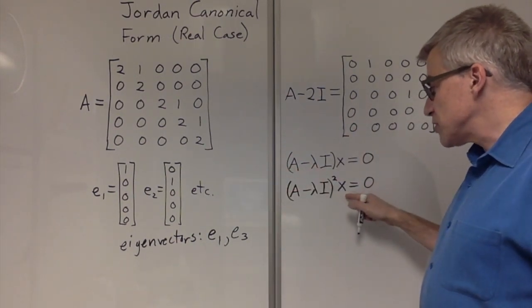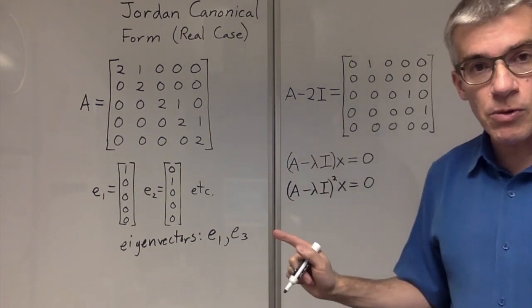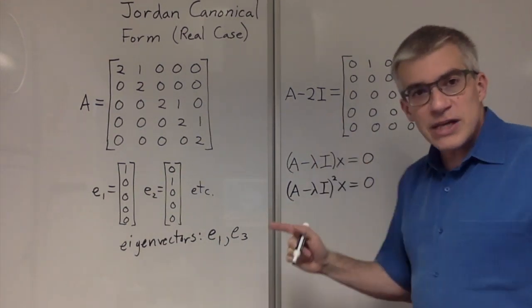it will produce a vector that, if you then do this again, will give you 0. But that second vector is an eigenvector.